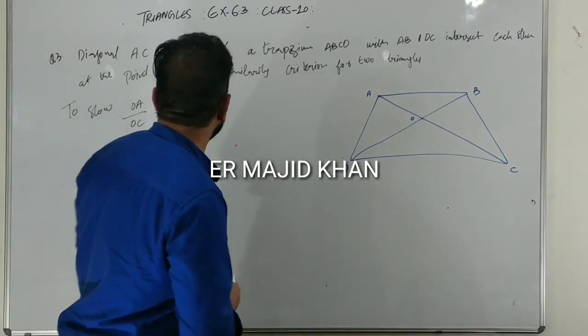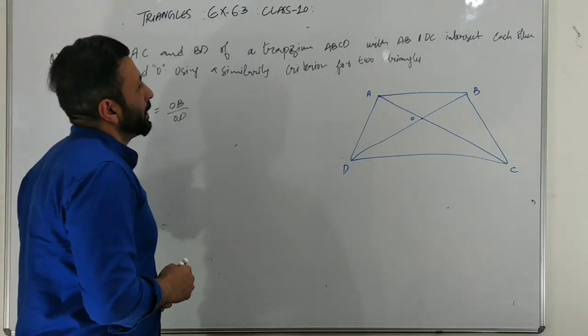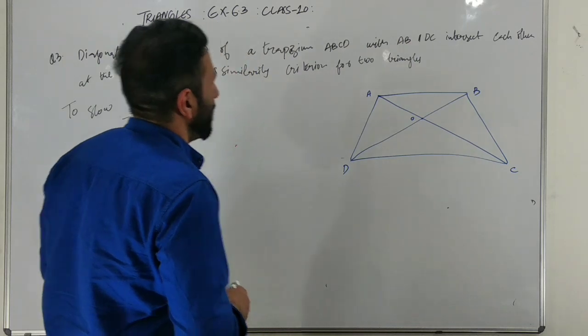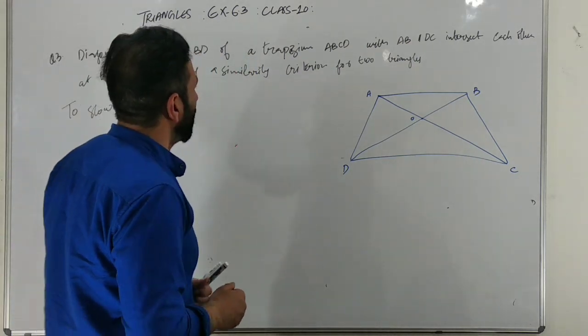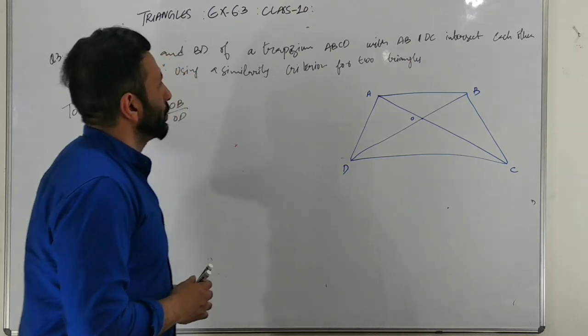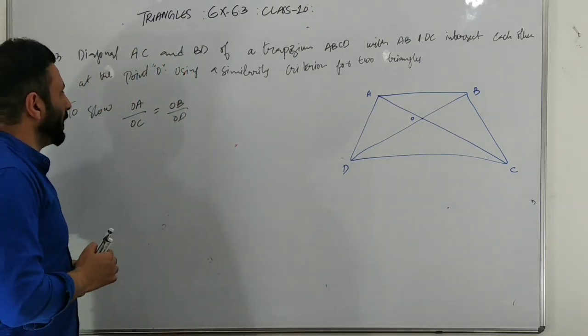Moving to our next question, question number 3. Diagonals AC and BD of trapezium ABCD with AB parallel to DC intersect each other at point O. Using a similarity criteria for the two triangles, show that OA by OC is equal to OB by OD.